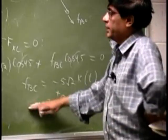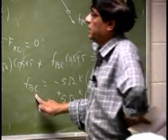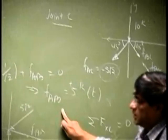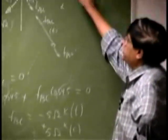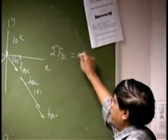Now that is all you need because you get FBC here, you get FAB here and you get FAC here. But there is still one more equation.